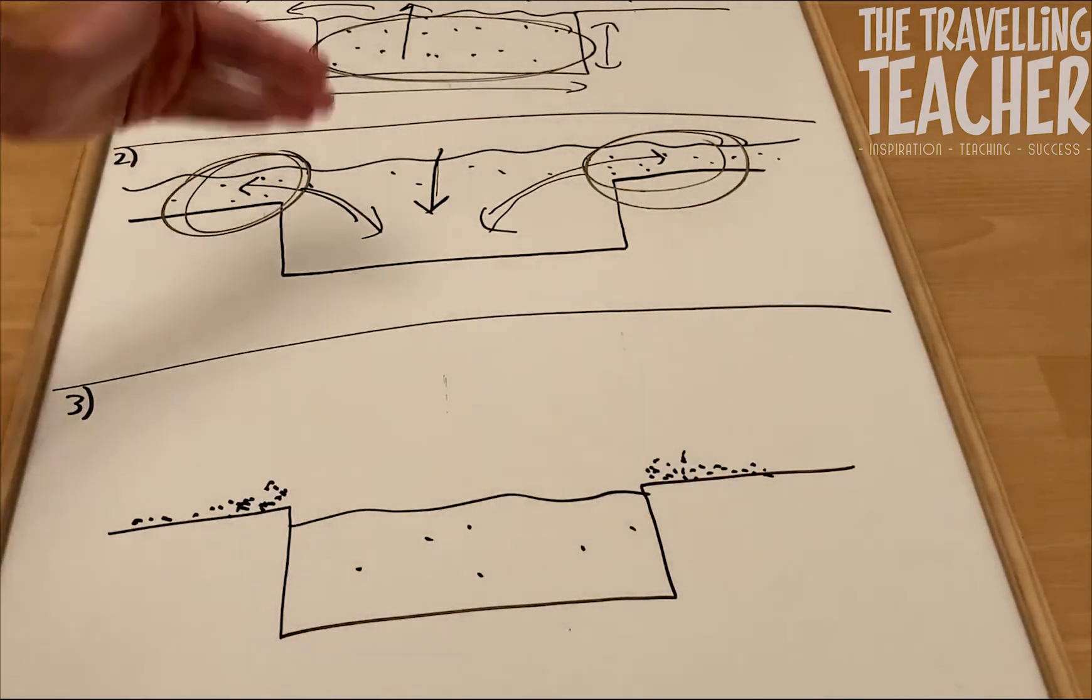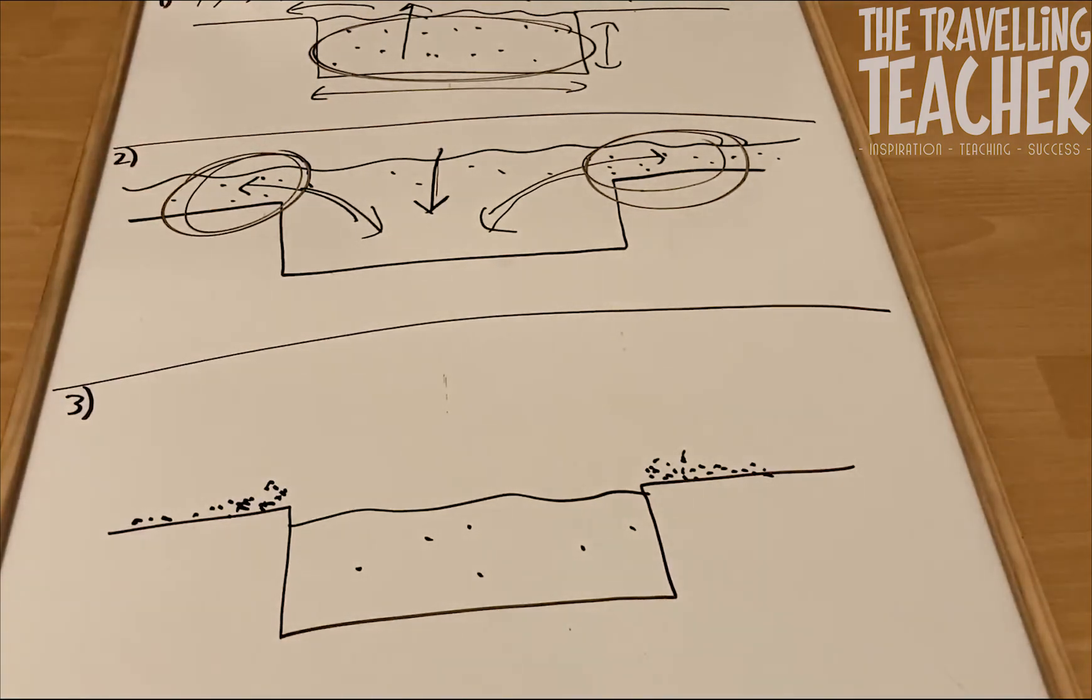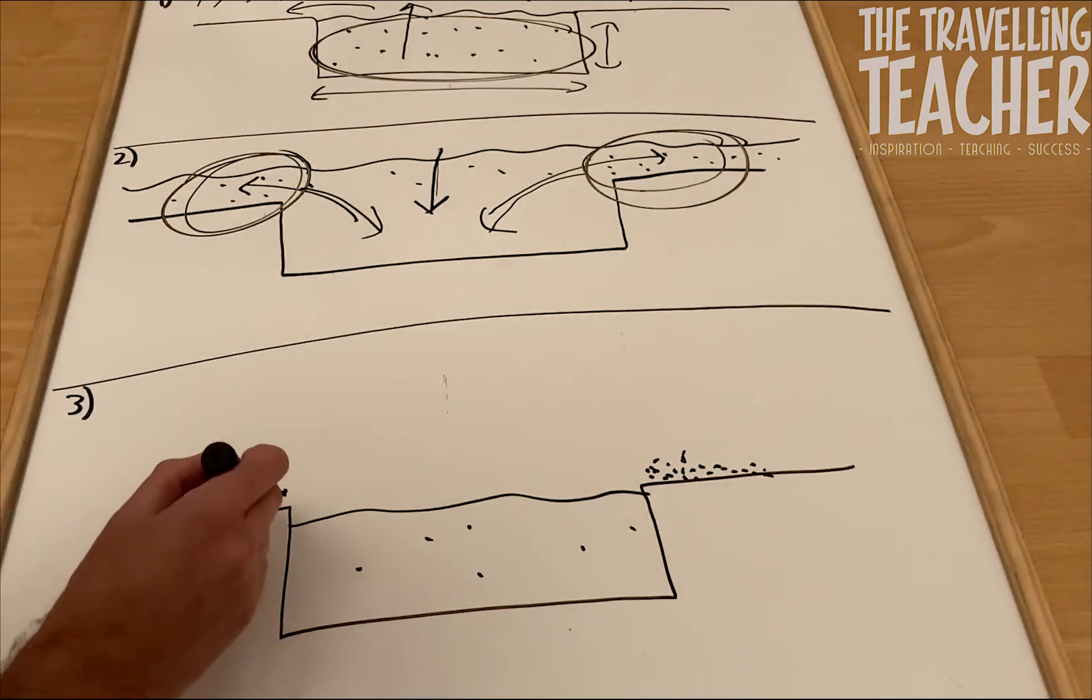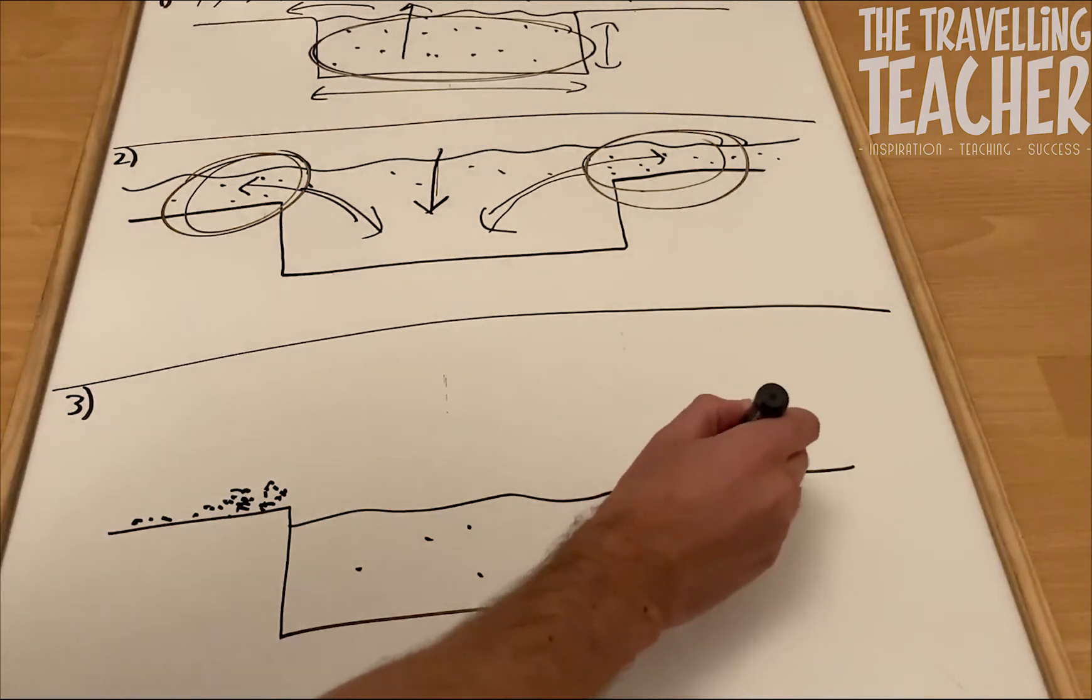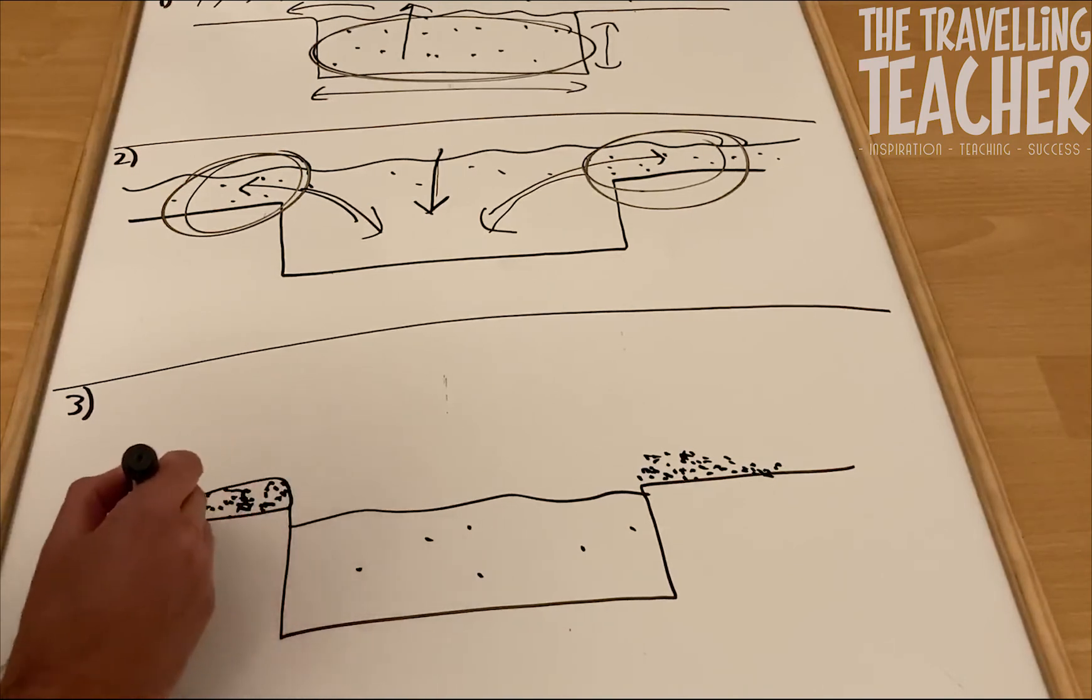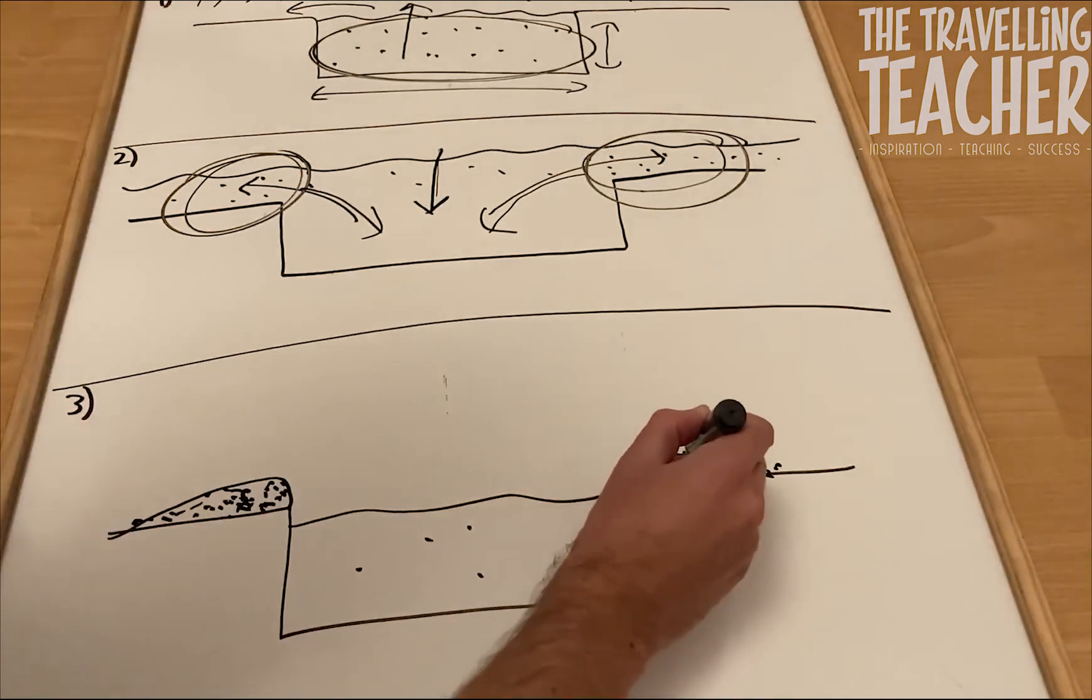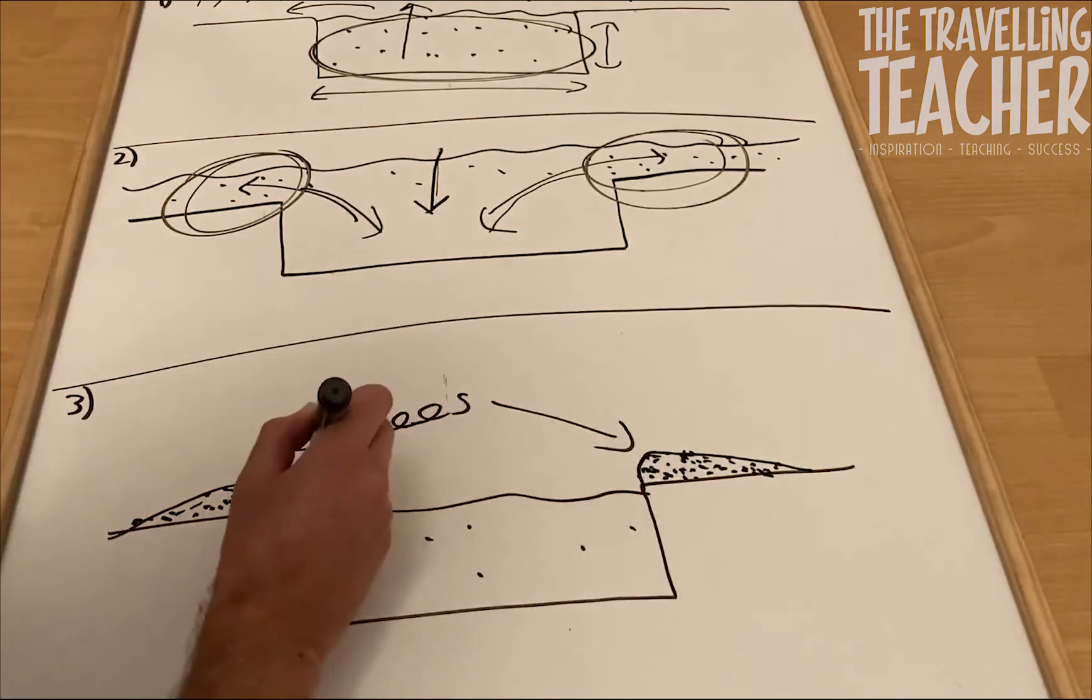Now, this process of flooding and deposition, flooding and deposition, it keeps happening. Unless obviously we modify the river and we stop it. But it keeps happening. It's a natural thing. It's going to happen. So this build up of sediment on either side of the river channel on the flood plain is just going to get much higher. It's getting higher, getting higher after each flood event. And there are our levees.